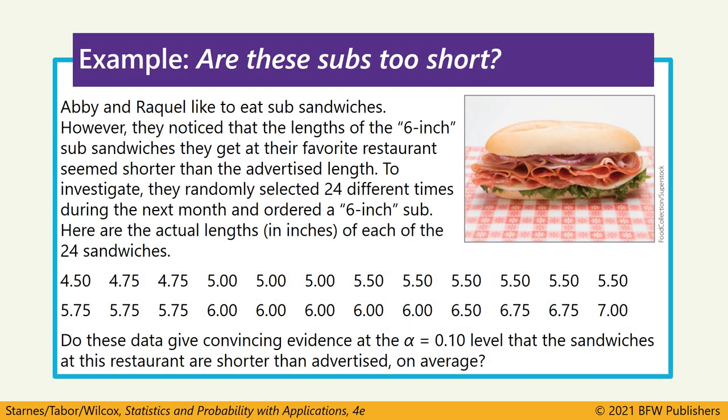Abby and Raquel love to eat subs. Their favorite restaurant has a six-inch sub option, but they suspect it's actually shorter than the advertised length. So they randomly select 24 different times during the next month and order this six-inch sub. Here we have a data set showing the lengths of all these subs. Does this data give us convincing evidence at the alpha equals 10% level that the sandwiches at this restaurant are shorter than advertised on average?